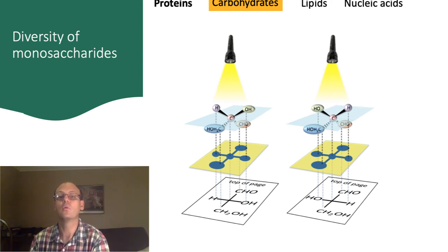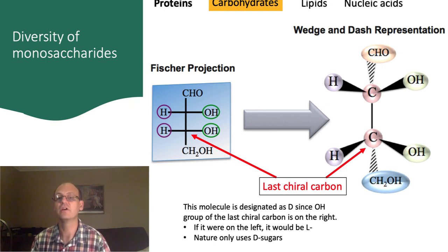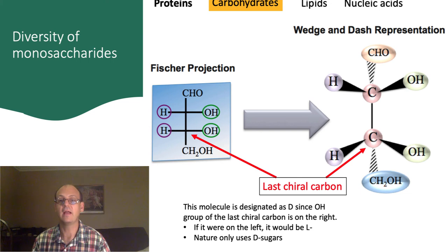Here's another example with a four-carbon molecule. Again, the carbonyl group is at the top of the page, and the horizontal lines represent groups that are coming out of the page towards your eye. I want to draw your attention to the last chiral carbon atom in the chain, which is important for naming the sugar. When the OH group is on the right of the last chiral carbon, it is a D, or dextrorotatory, sugar. If the OH group were on the left, it would be levorotatory and would be called an L sugar. Nature, for whatever reason, only uses D sugars.